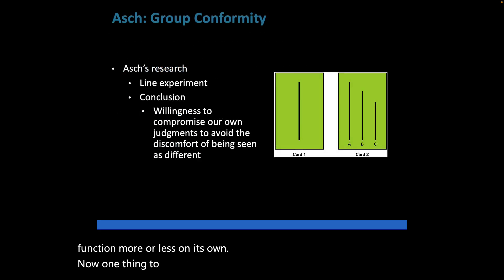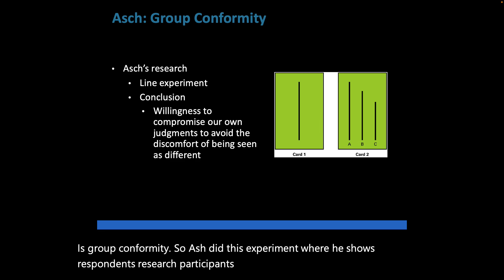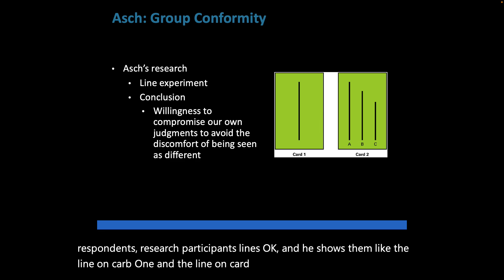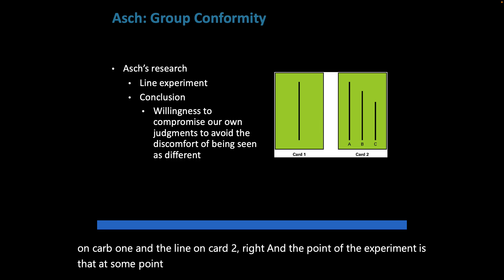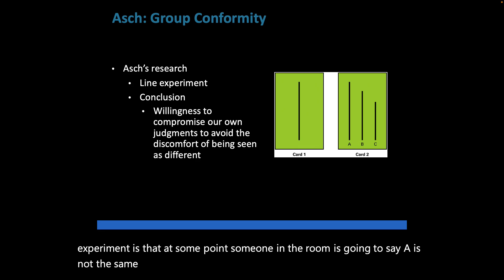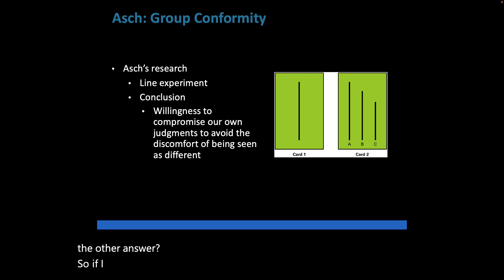One important concept with groups is group conformity. Asch did an experiment where he showed research participants lines on cards and asked which lines matched. At some point, a confederate in the room would give the wrong answer — say C instead of A — and the experiment measured whether other participants would conform to that incorrect answer, essentially second-guessing themselves and going along with the group.